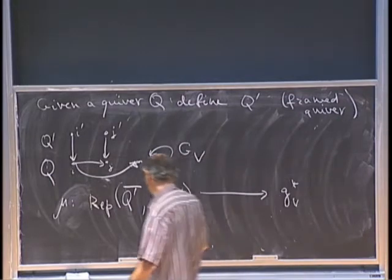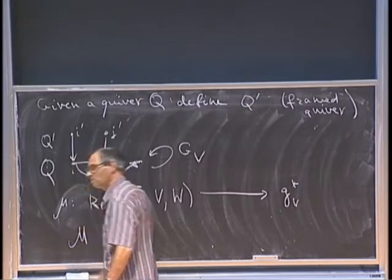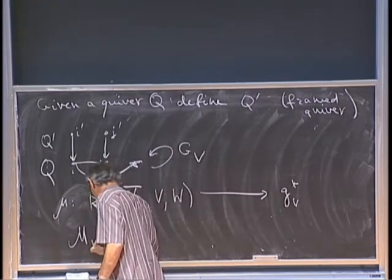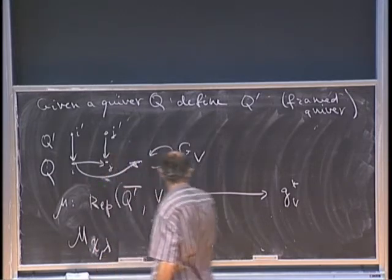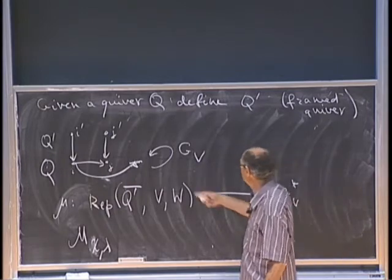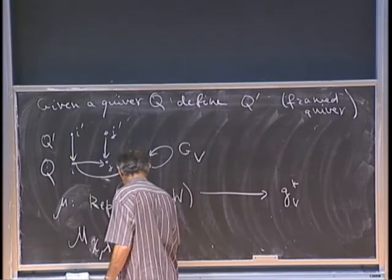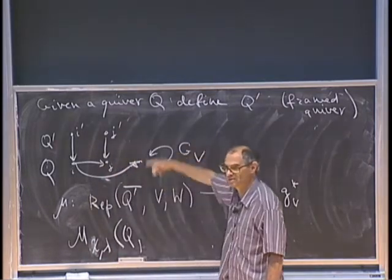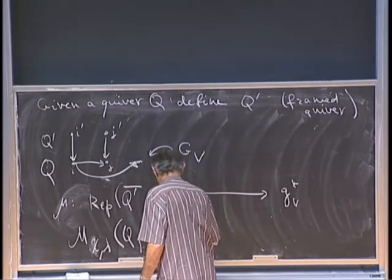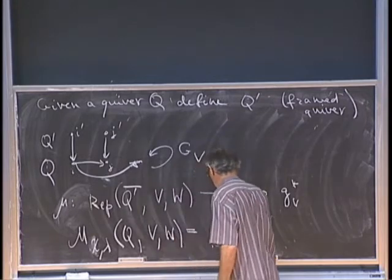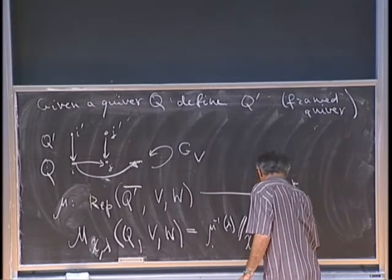We define the Nakajima quiver variety with parameters chi and lambda (no change to those). These correspond to a character of the group G_V and a point in the Lie algebra dual. We take mu-inverse of lambda, then the GIT quotient with character chi by G sub V.